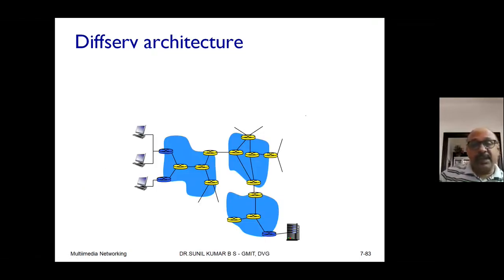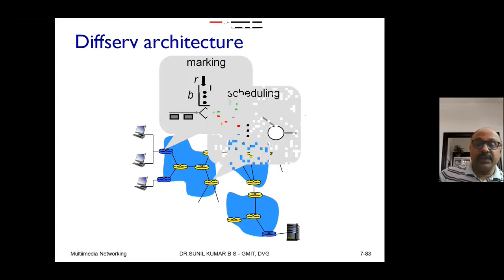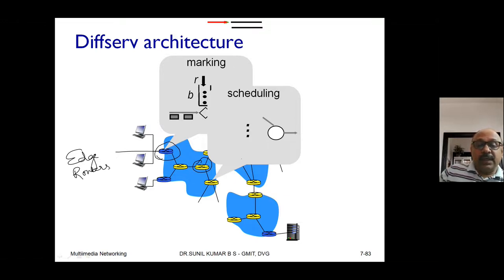Let us look at the architecture of the network. You can distinguish two types of network devices: the ones shown here are called edge routers, and the yellow-colored ones are called core routers.